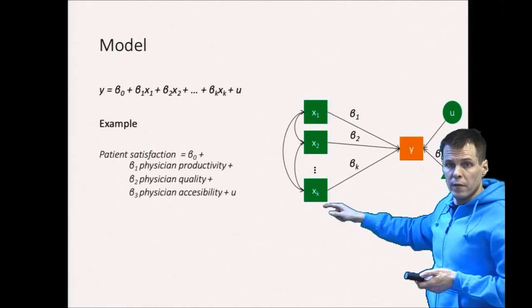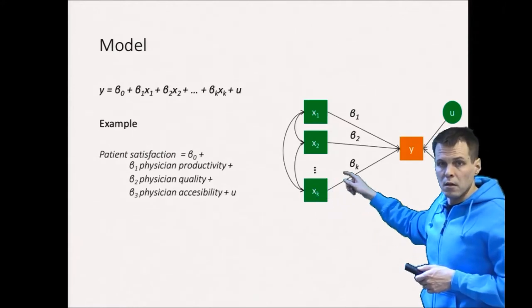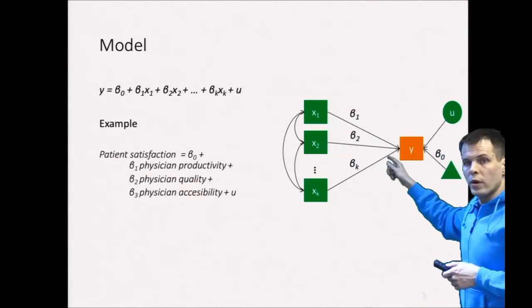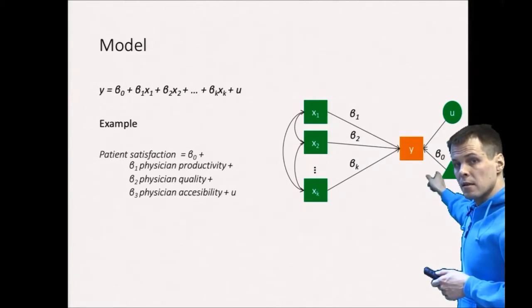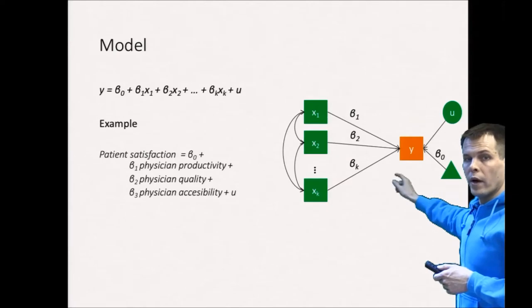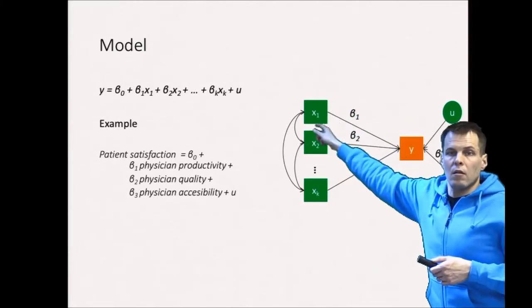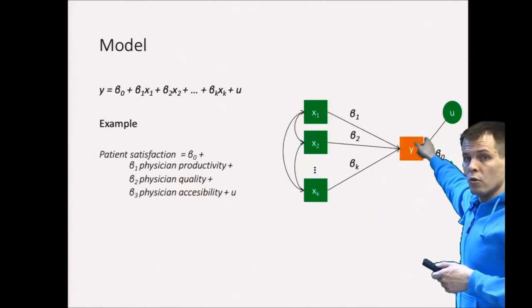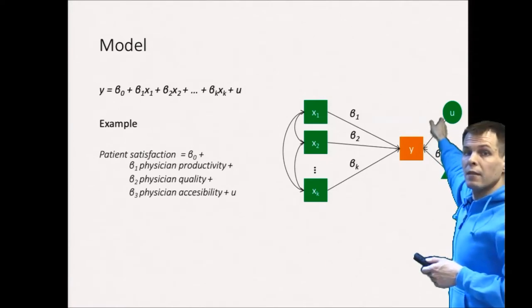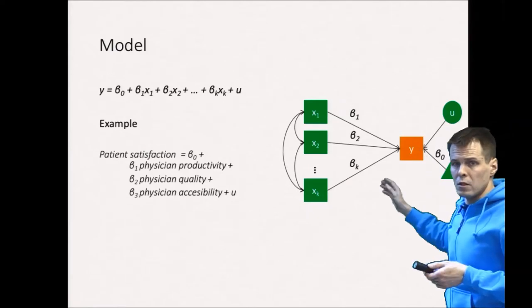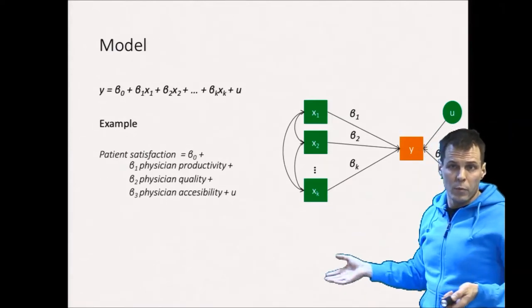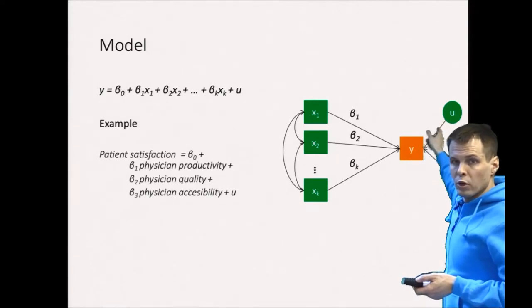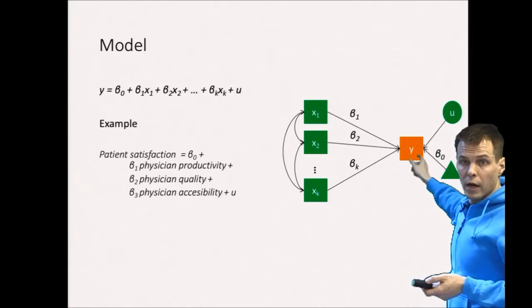But we are interested in estimating how they explain or predict the dependent variable y. The strength of influence of each variable is quantified by a regression coefficient beta. So we have one beta for each x here. Then we have beta 0 or the intercept which tells us the base level of y when all of these explanatory or independent variables are at zero. And then we have some variation u that the model doesn't explain. So this is remaining variation that is not explained by the model. Let's say that the model explains 20 percent of the variation of the dependent variable which is fairly typical for business research, then the unexplained variation would account for 80 percent of the true variation of y in the data.